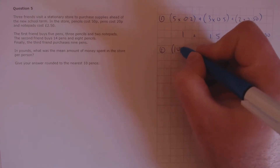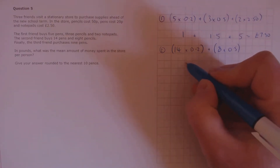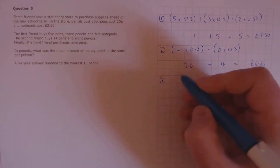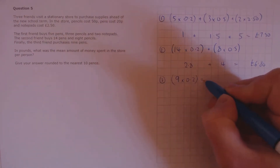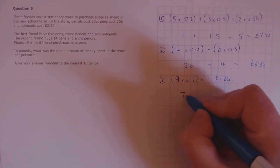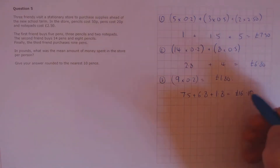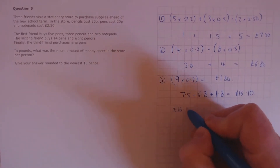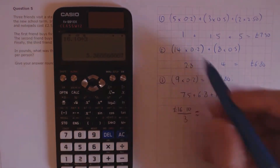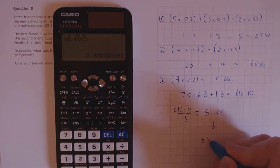The second friend buys 14 pens at 20p each, so that's 14 times £0.20, and 8 pencils at 8 times £0.50. That gives us £2.80 plus £4, which is £6.80. The third friend buys 9 pens, that's 9 times £0.20, which equals £1.80. To find the mean, we add these three together and divide by 3. So, £7.50 plus £6.80 plus £1.80 is £16.10. £16.10 divided by 3 is roughly £5.377, and rounded to the nearest 10 pence, that gives us £5.40.